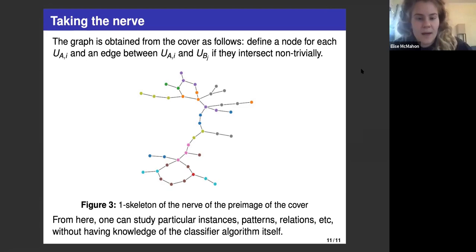That's how that works. Then we can obtain the graph from the cover by taking the nerve. Here we're defining a node for each U_A,i and an edge between them if they intersect non-trivially. Now each node represents a set of leaves that the algorithm sees as similar. However, they might not actually all be the same leaf. Only with perfect classification would this happen.